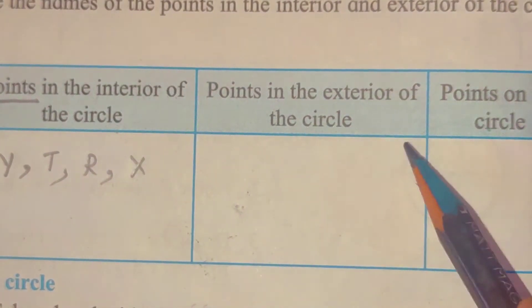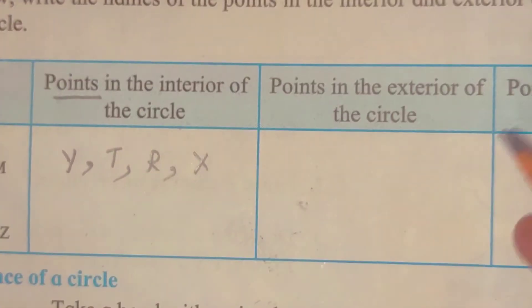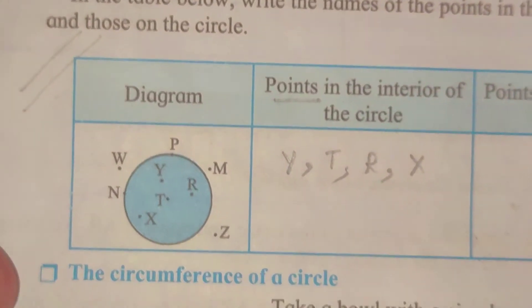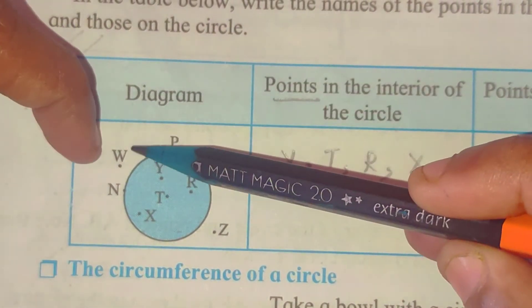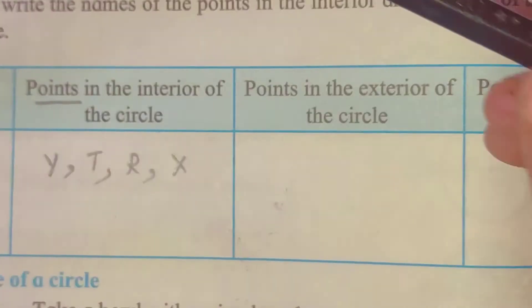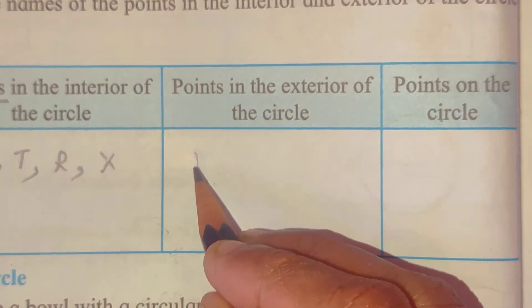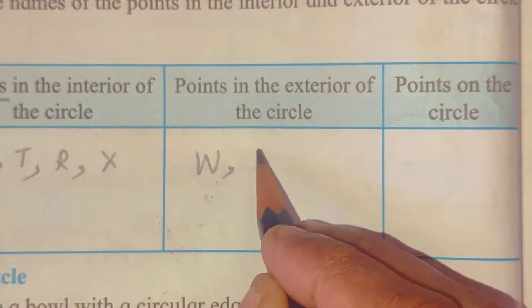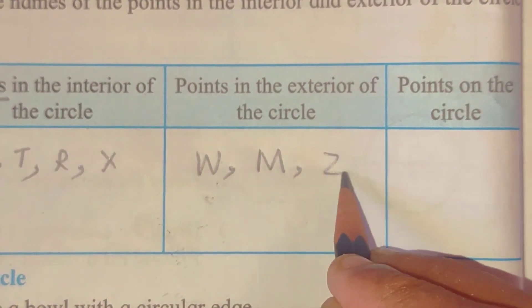Now, there are points in the exterior. So, here outside points are w, m and z. So, here we will write points in the exterior: w, m, z.